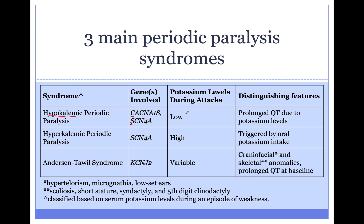As the name suggests, for hypokalemic periodic paralysis, the potassium level will be low during an attack. Low potassium levels in the blood can cause a prolonged QT interval, and that's dangerous because it can provoke life-threatening cardiac arrhythmias.